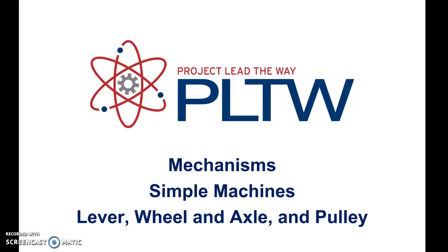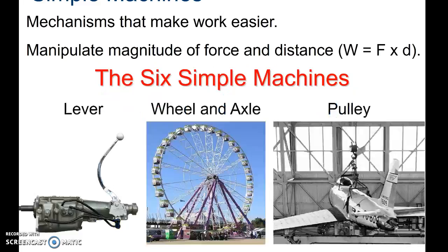This presentation will cover the first simple machine, which is the lever. There are a total of six different simple machines: the lever, the wheel axle, the pulley, the incline plane, the screw, and the wedge.